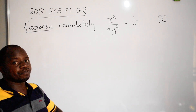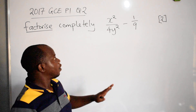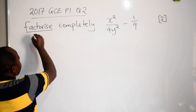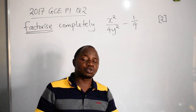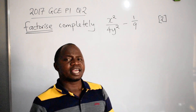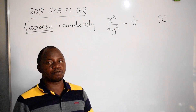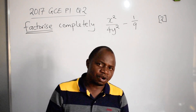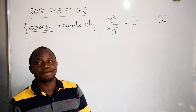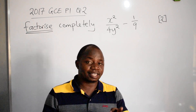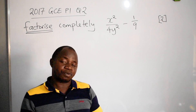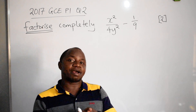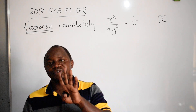The task here is to factorize. When we are given a question to do with factorization, the first thing that should come into your mind is to identify the type of factorization you are dealing with. We have common factorization, difference of two squares, quadratic factorization, and factorization by grouping.